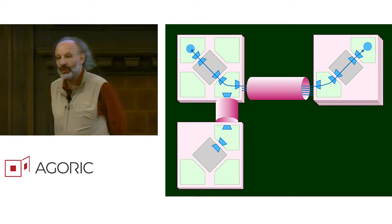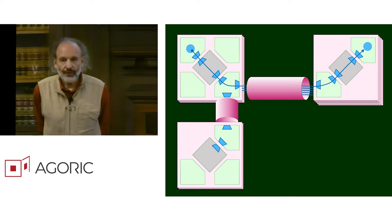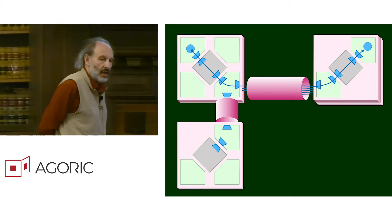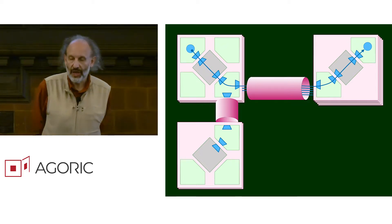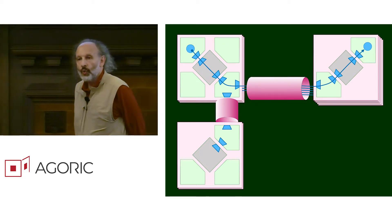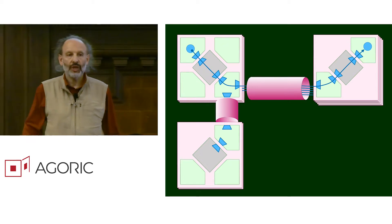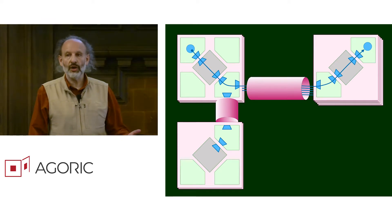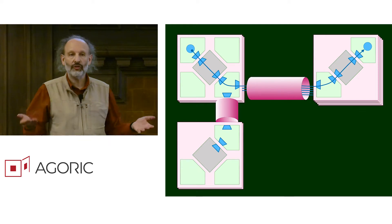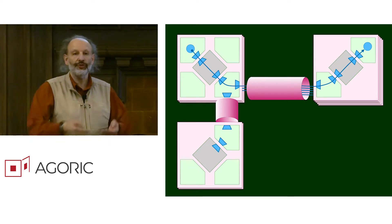Now we have several problems we need to solve. The first thing is that every chain has its own unique theory of legitimacy, has its own unique theory of what it means for computation to have legitimately happened in a particular way on the chain, such that all participants should agree that that was the result of the chain.